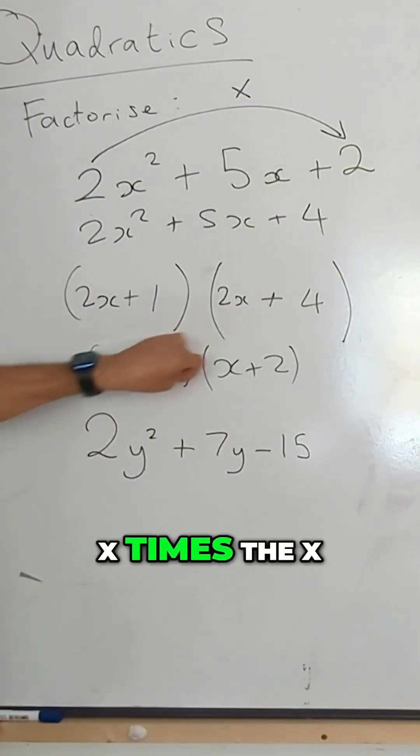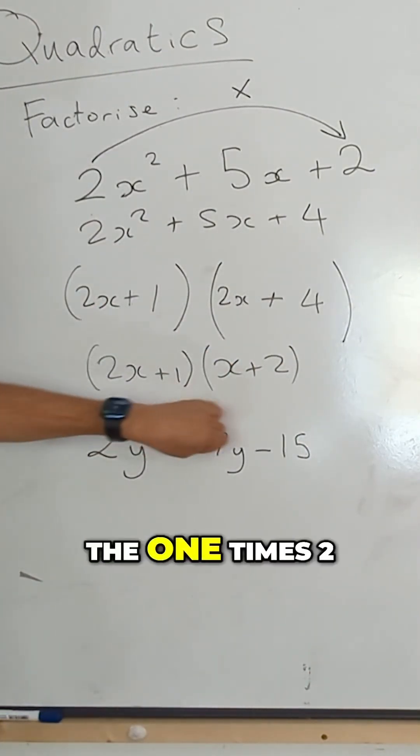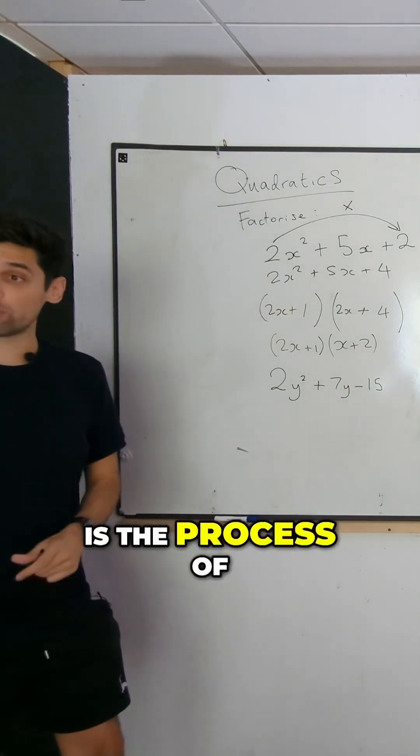And then you will see that 2x times the x makes 2x squared, the one times two makes two, and that is the process of how it works.